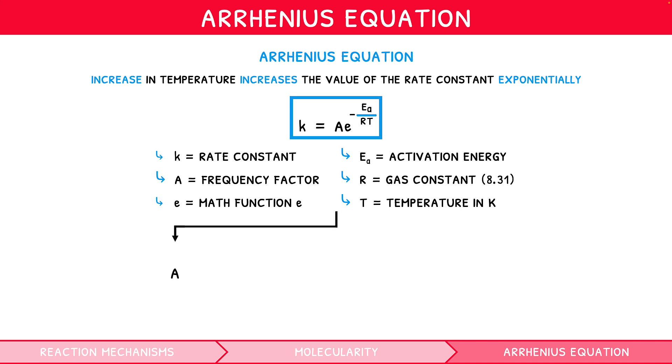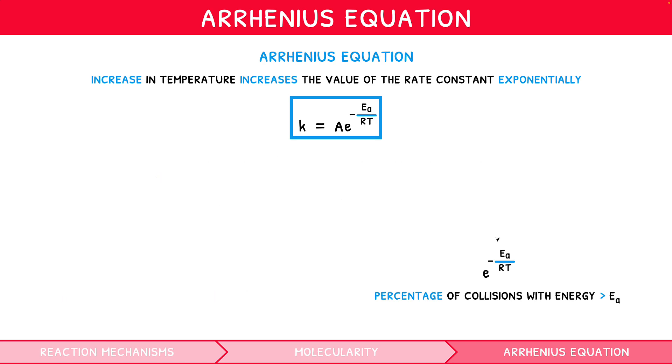It is often considered as two parts. A, the frequency factor, which considers the frequency and orientation of collisions, and E to the power of minus Ea over RT, which considers the percentage of collisions with energy greater than activation energy. There is also an adapted version of this formula.